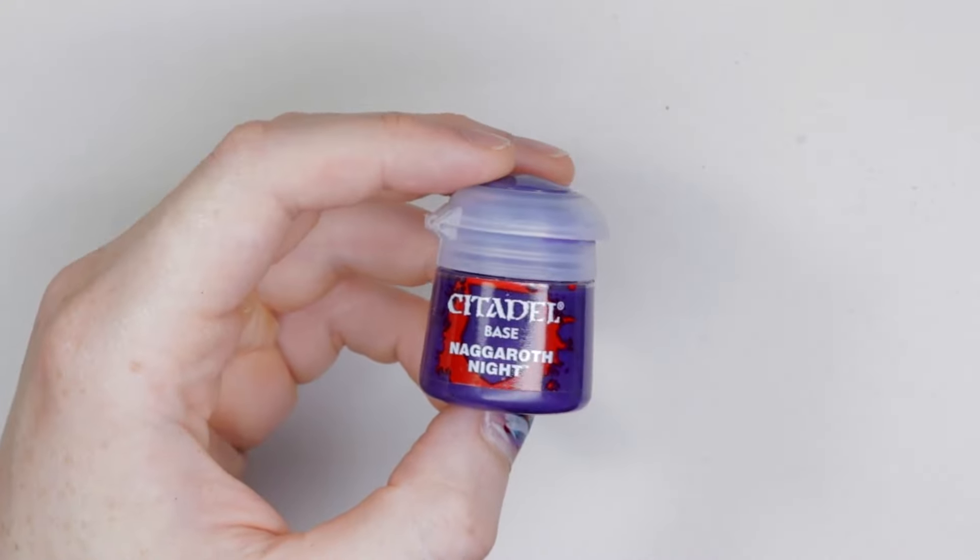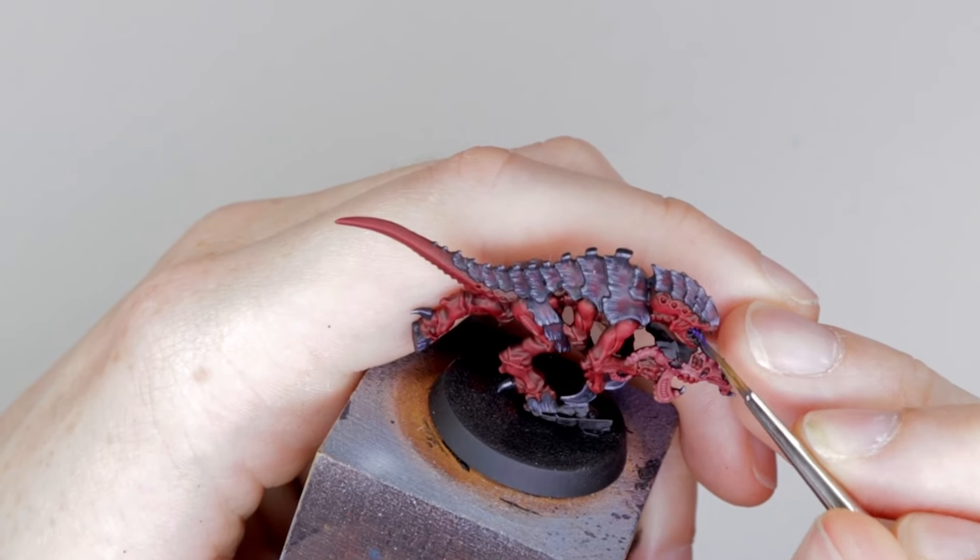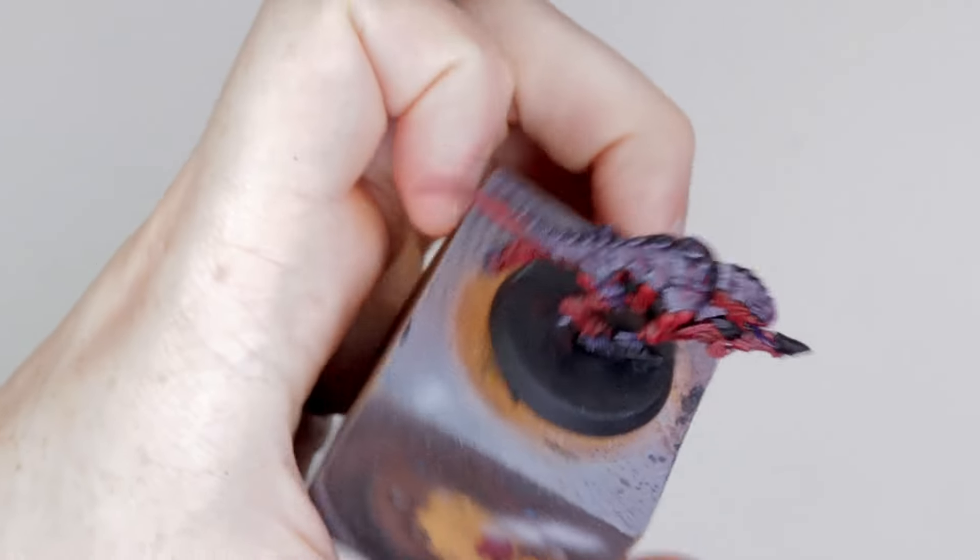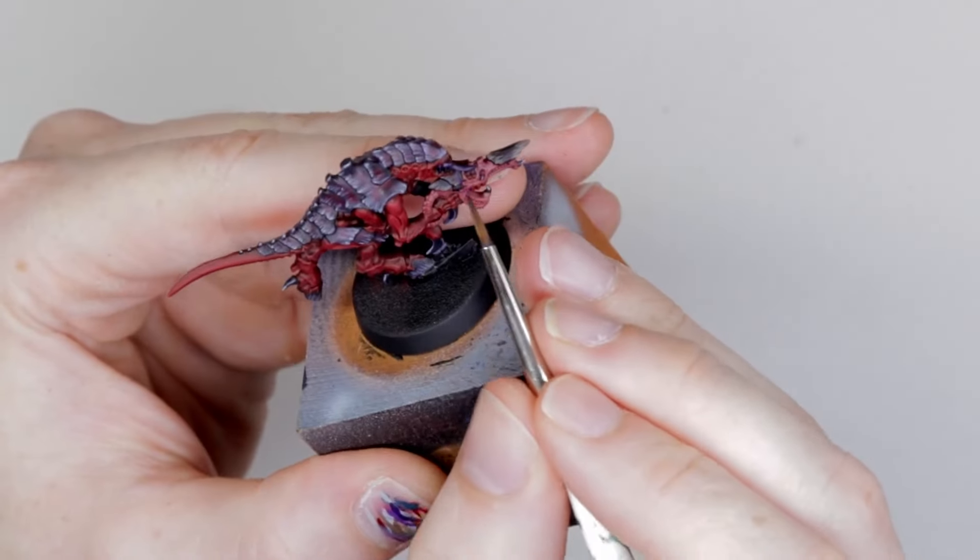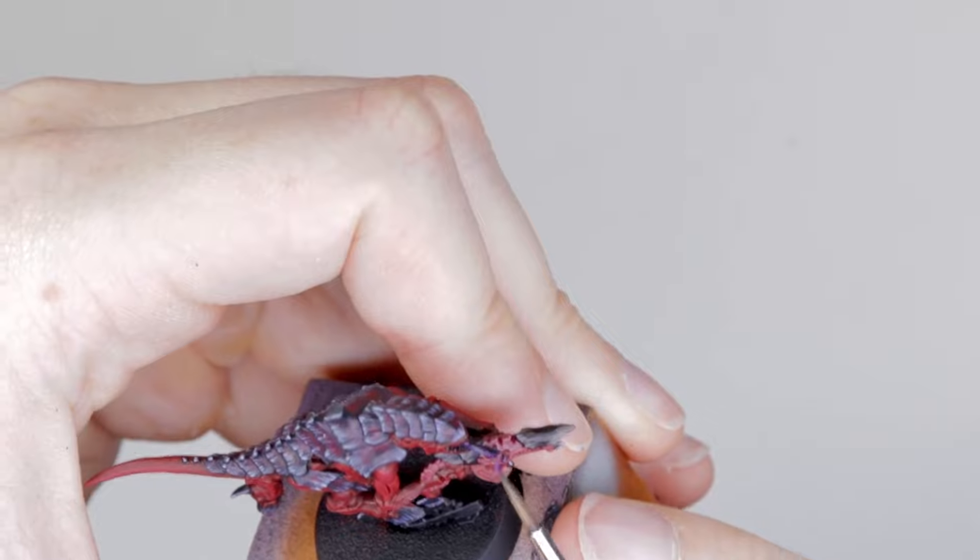Pick up Naggaroth Knight and paint in the tongue. I'm just adding a bit more color on here. It's purple, we used a lot of purple for this model on the carapace, so we're adding a bit more in there. Then we're going to highlight that with Xereus Purple, just light dabs along the edge of the tongue.